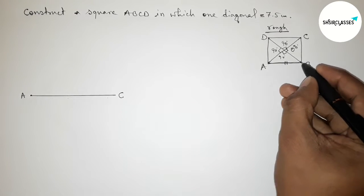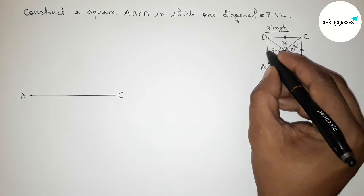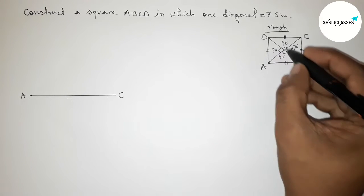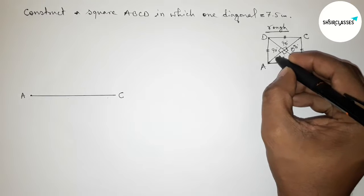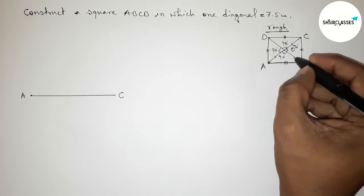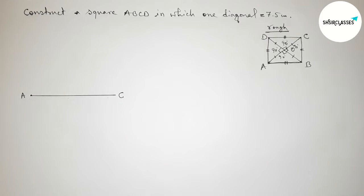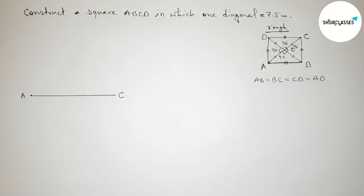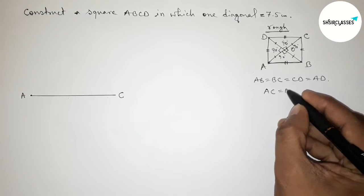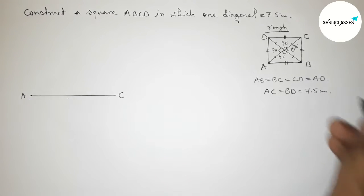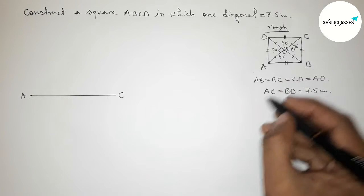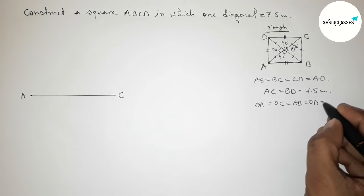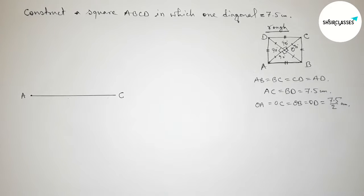All angles at O are 90 degrees. Also, all sides of the square are equal. The two diagonals bisect each other equally, so OA equals OC, and OB equals OD. Therefore: all sides are equal, the two diagonals AC equals BD equals 7.5 centimeters, and OA equals OC equals OB equals OD equals 7.5 divided by 2 centimeters.